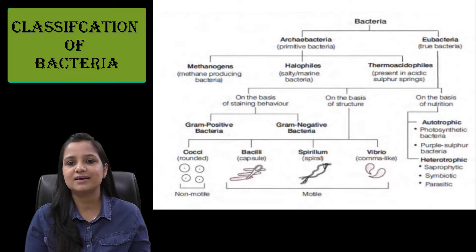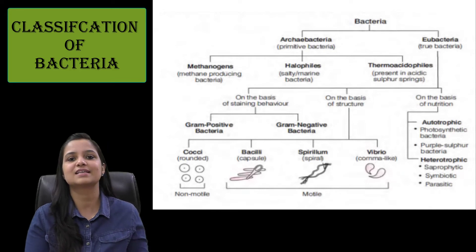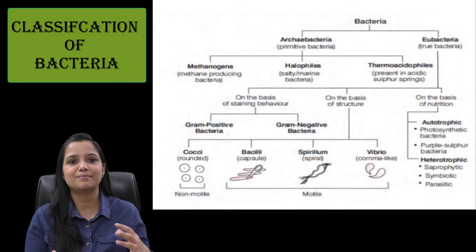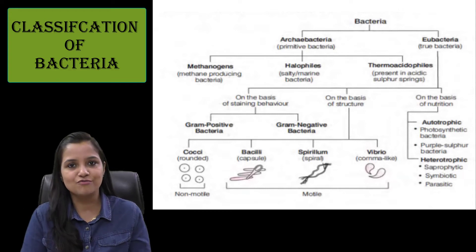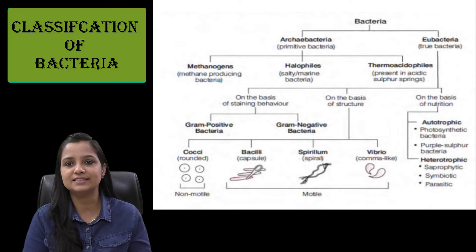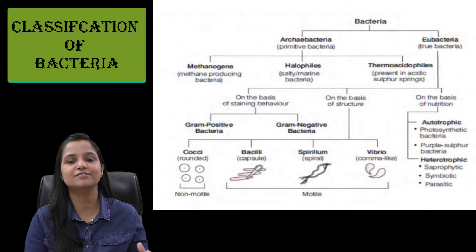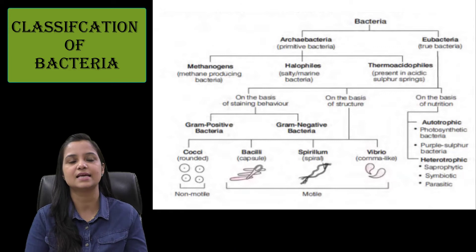Archibacteria is further divided into three main parts. The first one is the methanogens, that is methane-producing bacteria. The second one is the halophiles, that is salty or marine bacteria. And the third one is the thermoacidophiles, that is present in the acidic sulfur springs.